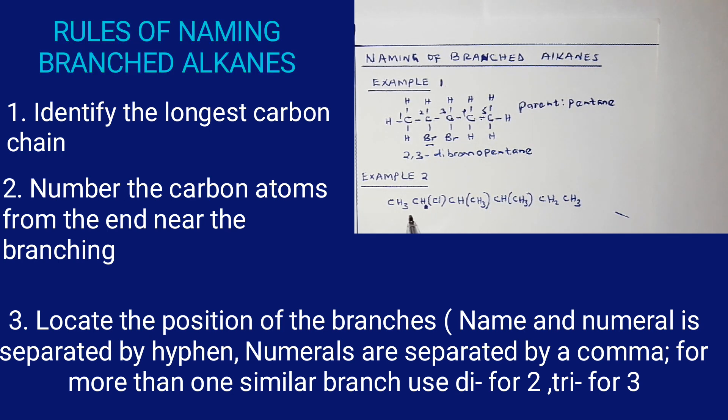In example number two, whatever you have in a bracket is called a branch. So this here is a chloro branch, this is a methyl, and this one is a methyl. If methyl is attached to the end, it does not become a branch; it's part of the chain.